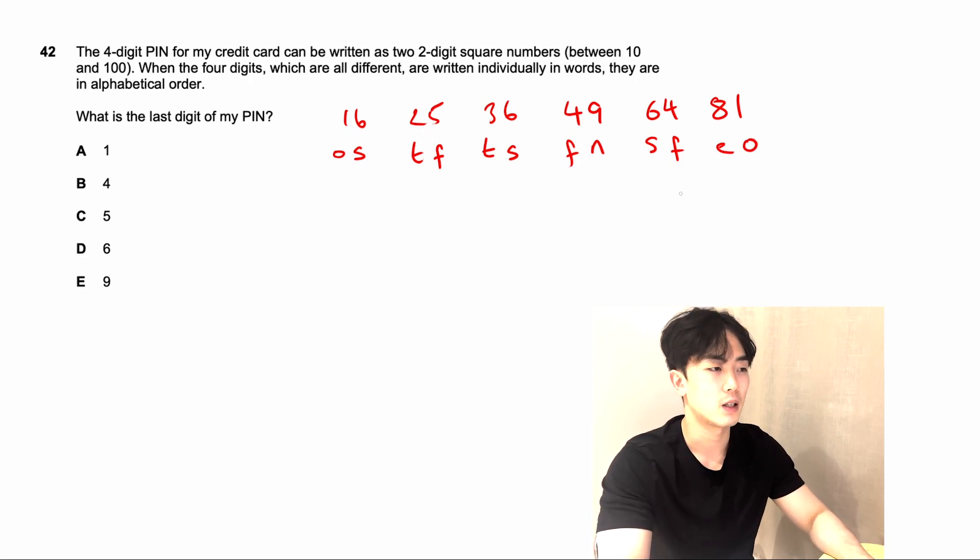There's a four-digit PIN, so we're only going to have to choose two of these square numbers. But importantly, when they are in order, they are in alphabetical order. So let's first work out individually in each square number whether this is possible. If we look at 16 here, it's O, S. S is alphabetically later than O, so 16 is a possible number we can use.